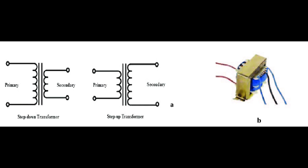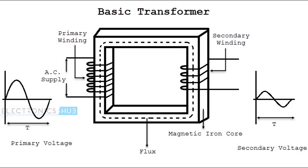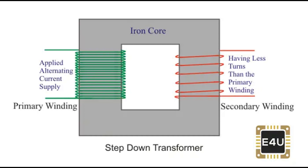Step-down transformers can provide electrical isolation between different circuits, preventing ground loops and improving safety. Isolation transformers have a 1-to-1 turns ratio and are often used in medical equipment, laboratory instruments, and sensitive electronic devices. In electronic circuits, step-down transformers provide different voltage levels for various components and are used in power supplies to convert higher voltages to required lower voltages. They are also commonly used in low-voltage lighting systems, such as halogen or LED lighting, to convert higher mains voltage to the lower voltage needed. In industrial processes, lower voltage levels are required for specific equipment, and step-down transformers provide the necessary voltage reduction.